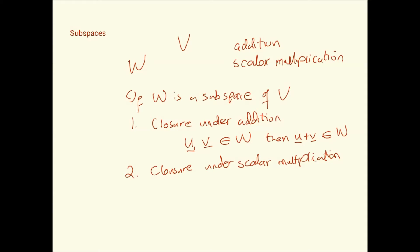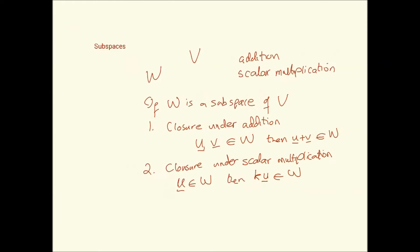These closure properties are not automatically inherited, as I will show with some examples. For closure under scalar multiplication: if U belongs to W, then k times U also belongs to W. So the only difference is that before we were looking at closure under V; now we're looking at closure under W itself.